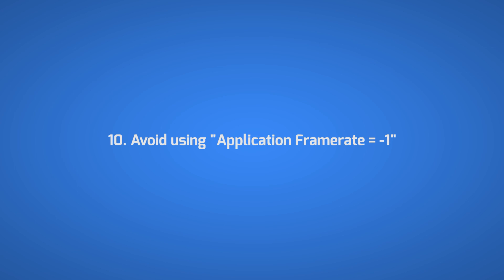The last tip is not directly related to visual effects but is an important performance tip: avoid using Application.targetFrameRate equals minus one, because this will use the graphics card to its maximum potential, which is often not necessary. It is recommended to allow the user to set the frame rate they want.